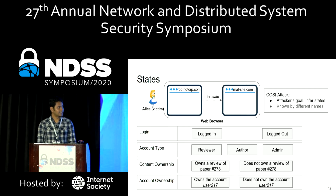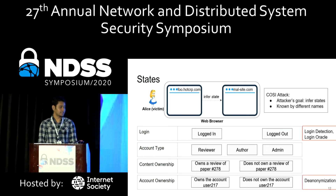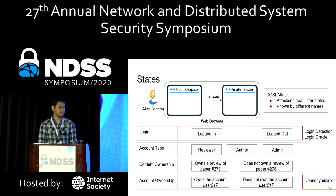Given that COSI attacks are about inferring different types of state from websites, they have been known by different names in the past. For instance, attacks based on login detection were called login detection attacks or login oracle attacks. And the attack on account ownership — where the malicious site checks whether Alice owns another account at another website — were commonly referred to as de-anonymization attacks.